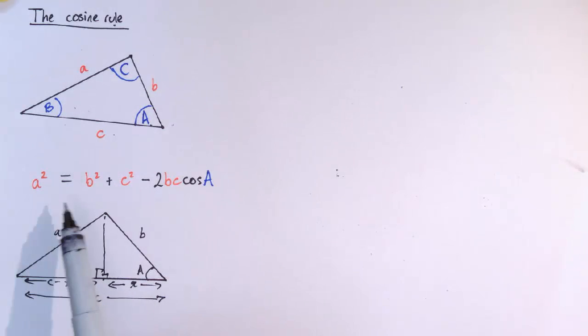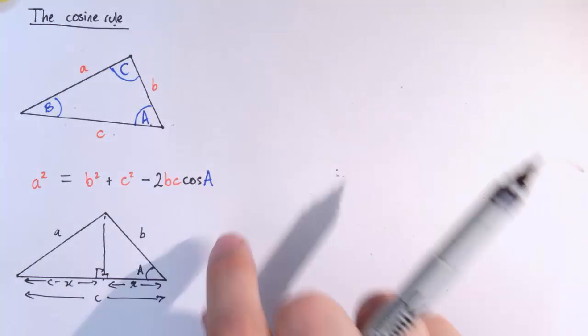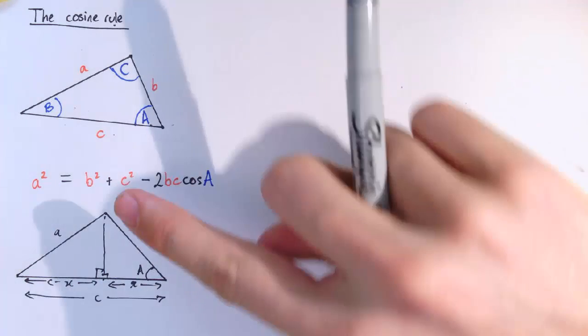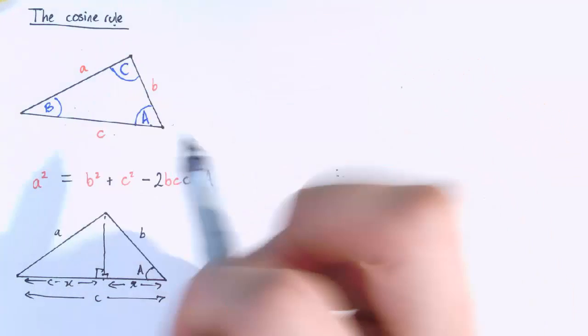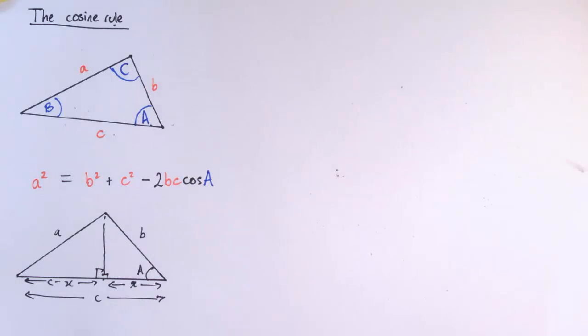And here's the cosine rule: a squared equals b squared plus c squared minus 2bc cos a. First thing you might notice about this is actually if a is 90 degrees, then cos a is zero and so this whole term just disappears and it reduces to Pythagoras theorem that says in a right angle triangle where a is 90 degrees, a squared equals b squared plus c squared.